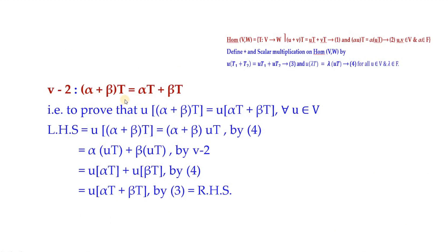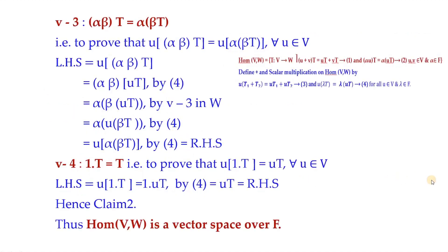For V2, we need to prove that (α+β)T = αT + βT for α, β in F. Since mappings are equal when images are equal, we consider the left-hand side. Using equation 4 and then V2 in W, and applying equation 4 again, and finally equation 3 for the mappings αT and βT, we obtain the right-hand side. This proves V2.